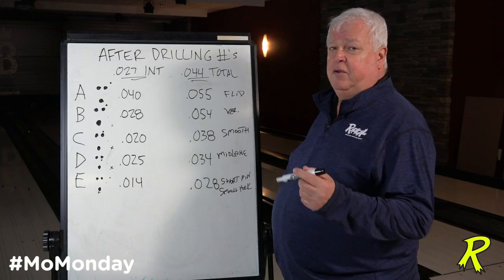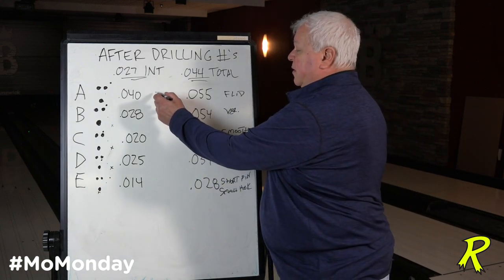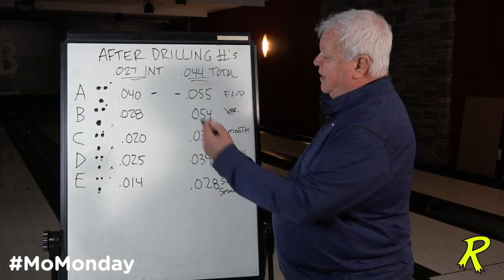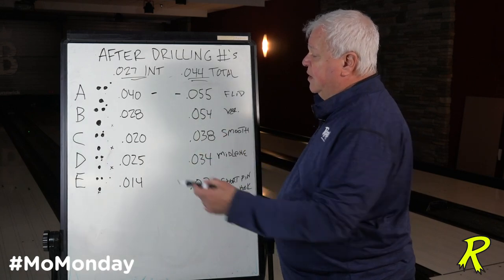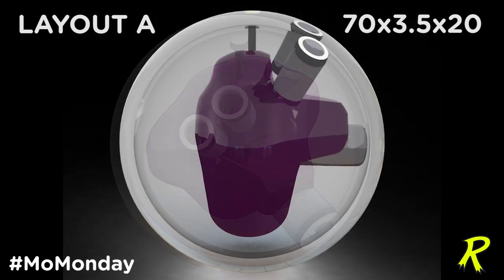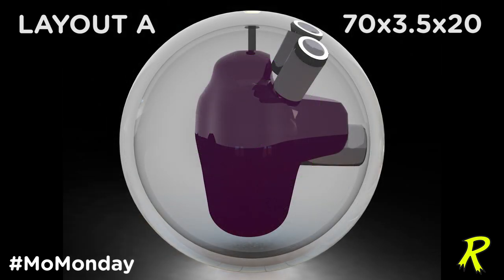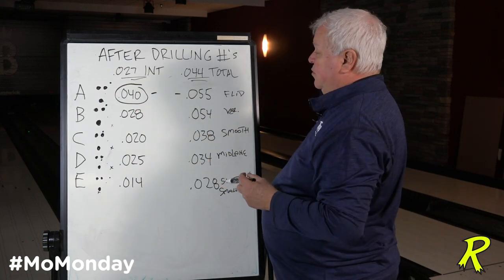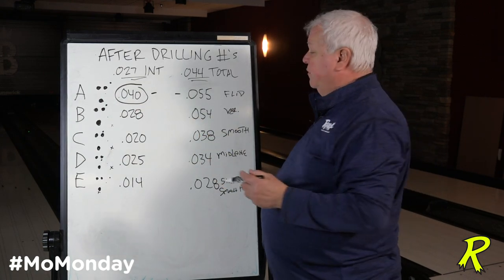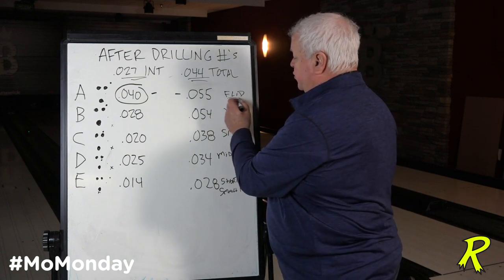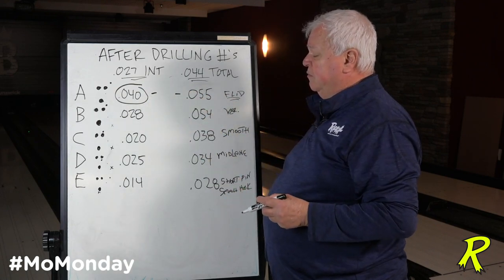When you start putting holes in, you vary and alter the intermediate diff and the total diff. In the case of the first drilling with the pin up, the holes go into the body of the core and the thumb goes into the belly of the core. The impact of that change raises the intermediate diff to 040 and the total diff to 055, causing a flip drilling simply by the angles used.